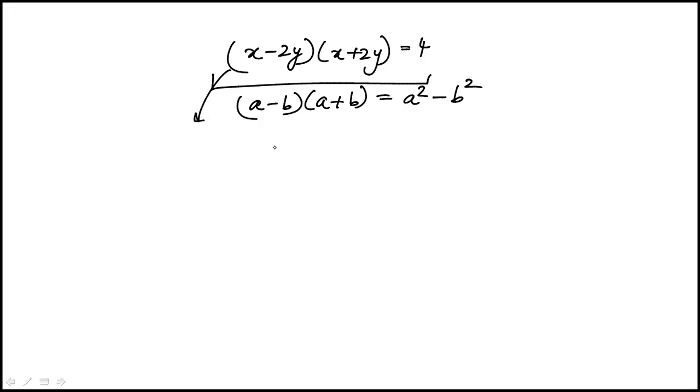And in this case, x minus 2y times x plus 2y would be equivalent to x squared minus 4y squared equals 4.